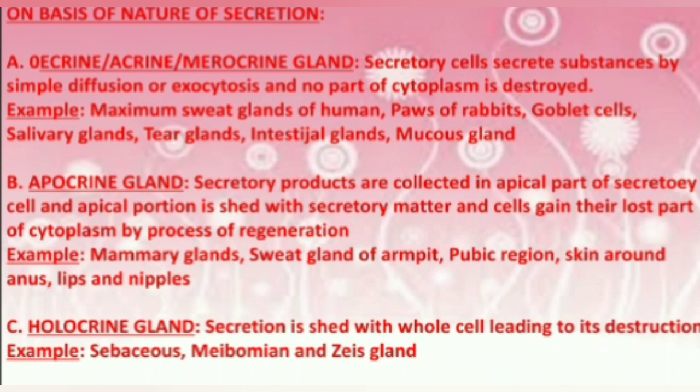On the basis of the nature of secretion, glands are divided into three types. First, the eccrine or merocrine gland, where secretory cells secrete substances by simple diffusion or exocytosis and no part of the cytoplasm is destroyed, like goblet cells. Second is the apocrine gland, where secretory products collect in the apical part of the secretory cell and the apical portion is shed with the secretory matter.